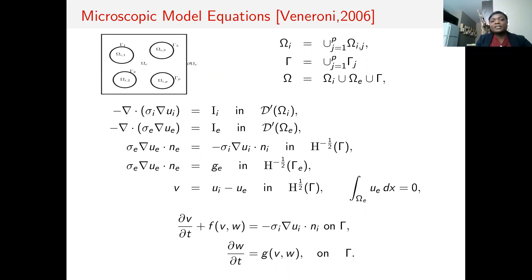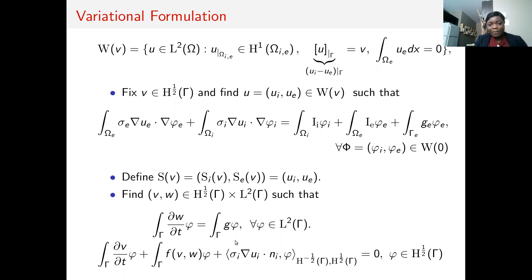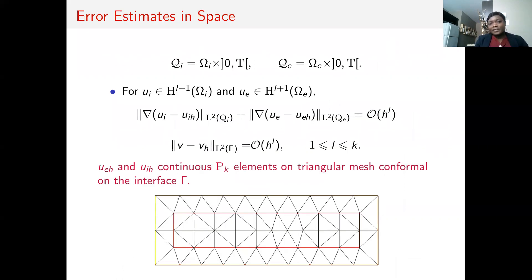This model can be challenging to solve numerically. For the variational formulation, we first define the appropriate function spaces, then we decompose the model into two subproblems: one solved inside the domain and one outside. We then define an operator and solve two problems at the interface gamma. We use Lagrange P_k elements on a triangular mesh that is conformal on the interface gamma.